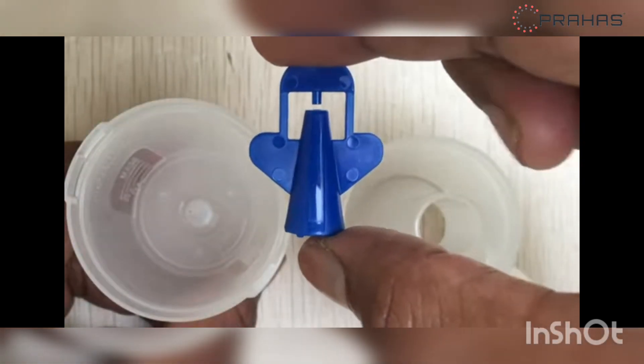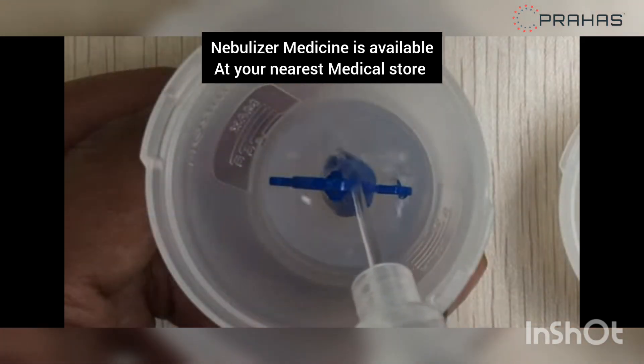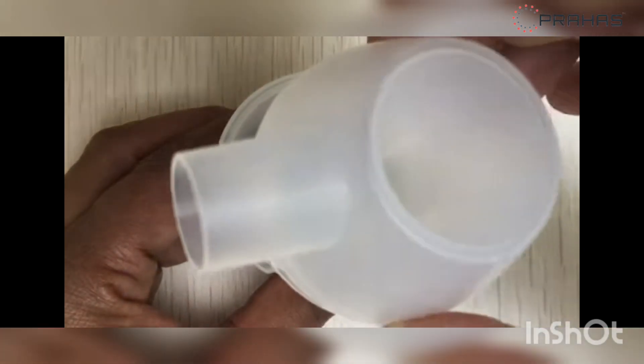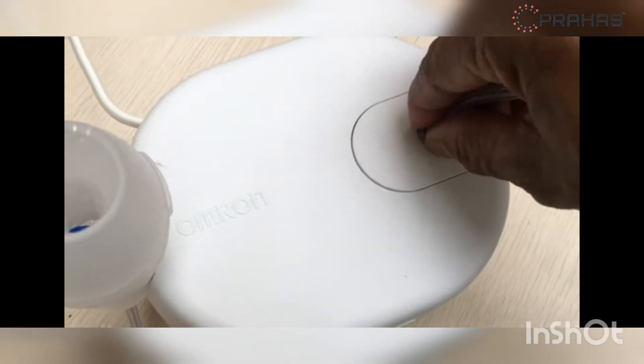Make sure the vaporizer head is placed inside the tank and add correct amount of prescribed medication. Put the inhalation top back onto the medication tank. Attach other end of the tube to compressor firmly.